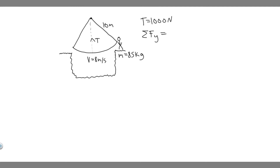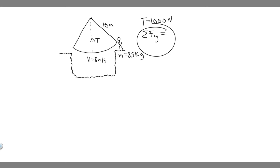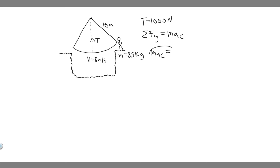Let's think about how we're going to solve this. For problems involving forces like this, we take the sum of forces in one direction — in this case the y-direction. We evaluate at the bottom of the swing because that's where we're given the velocity. Since we're moving in a circle, the net force equals mass times centripetal acceleration: ΣF_y = m × a_c.